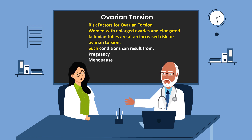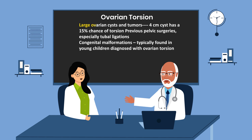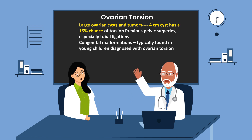Such conditions can result from pregnancy, menopause, and large ovarian cysts and tumors. Approximately a 4 cm cyst has a 15% chance of torsion.